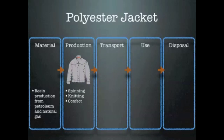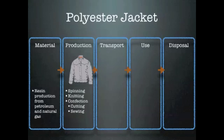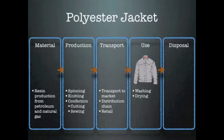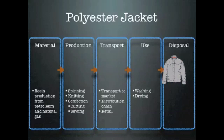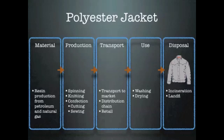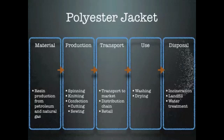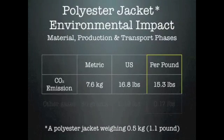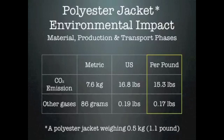Now let's take a look at the case of the polyester jacket. What are the processes involved in its life cycle? For synthetic clothing, most of the environmental impact is due to petroleum and energy use, and save for when there's an oil spill, this mainly takes the shape of greenhouse gas emissions.